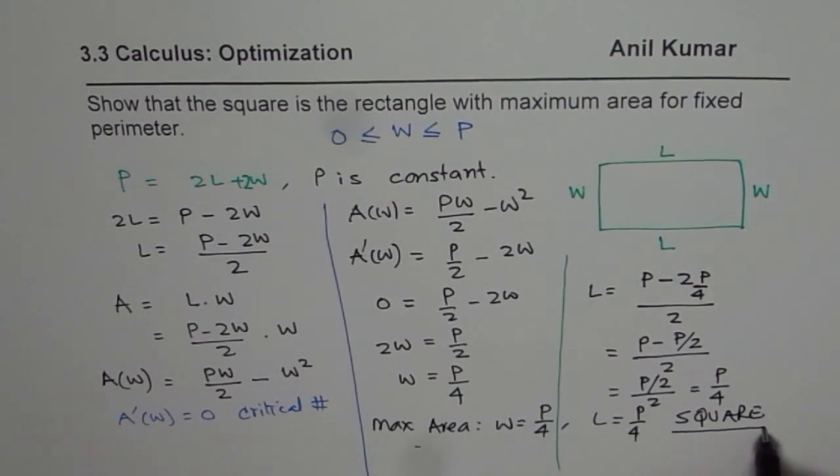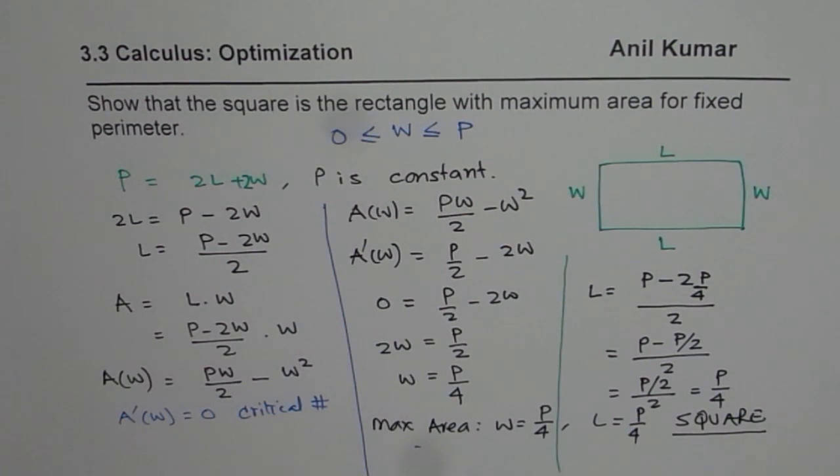So in general, for any given rectangle with fixed perimeter, if you need to find what are the dimensions of the rectangle for maximum area, the answer is square. One fourth of perimeter is the side of your square. I hope that helps. Thank you.